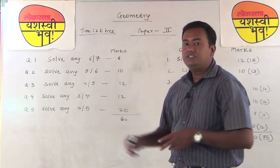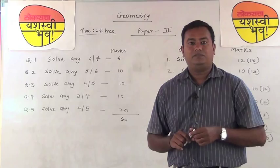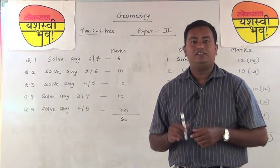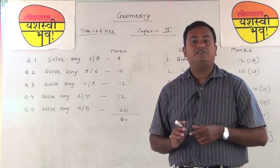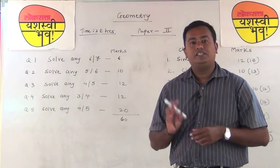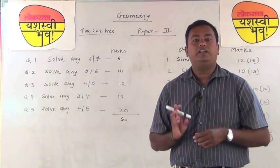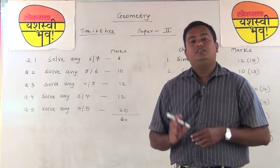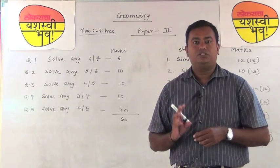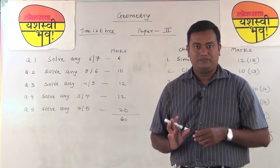1 and 2 mark questions are very easy, so don't waste time writing 'given, to find, and solution.' You can directly start with the answer. Don't waste your time on question 1 and 2. You can write 'given, to find, and solution or proof' from 3-mark questions onwards.